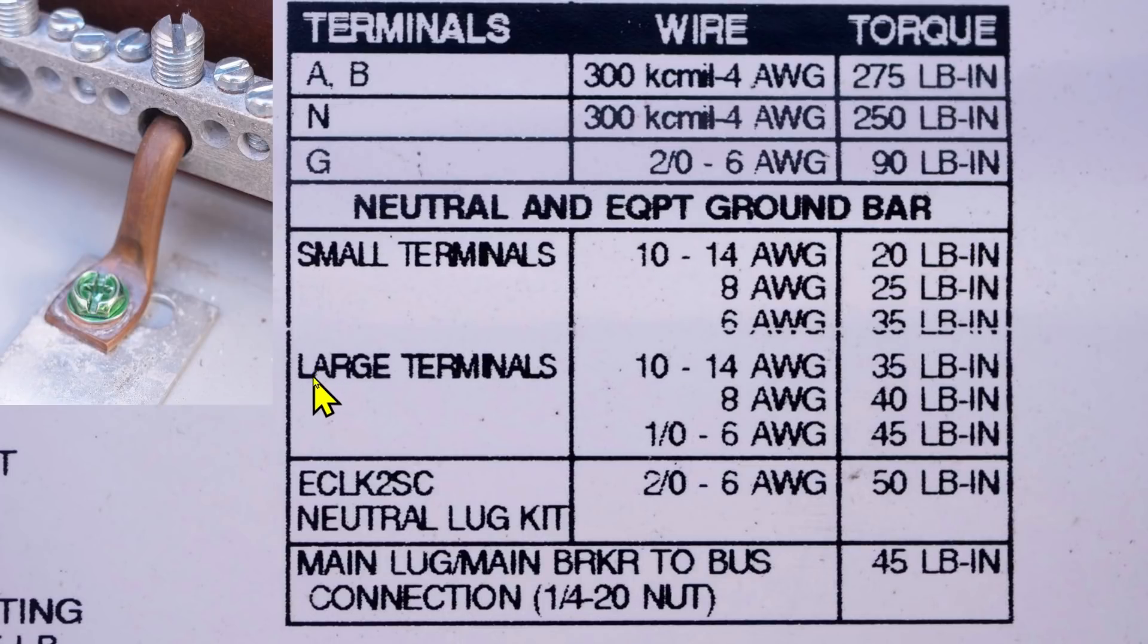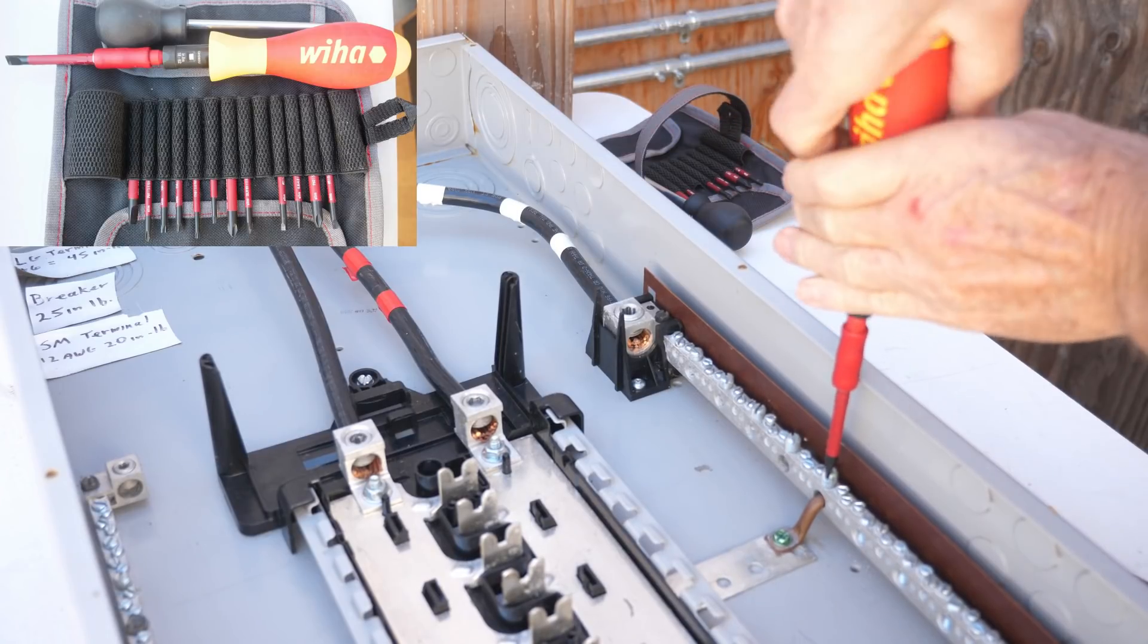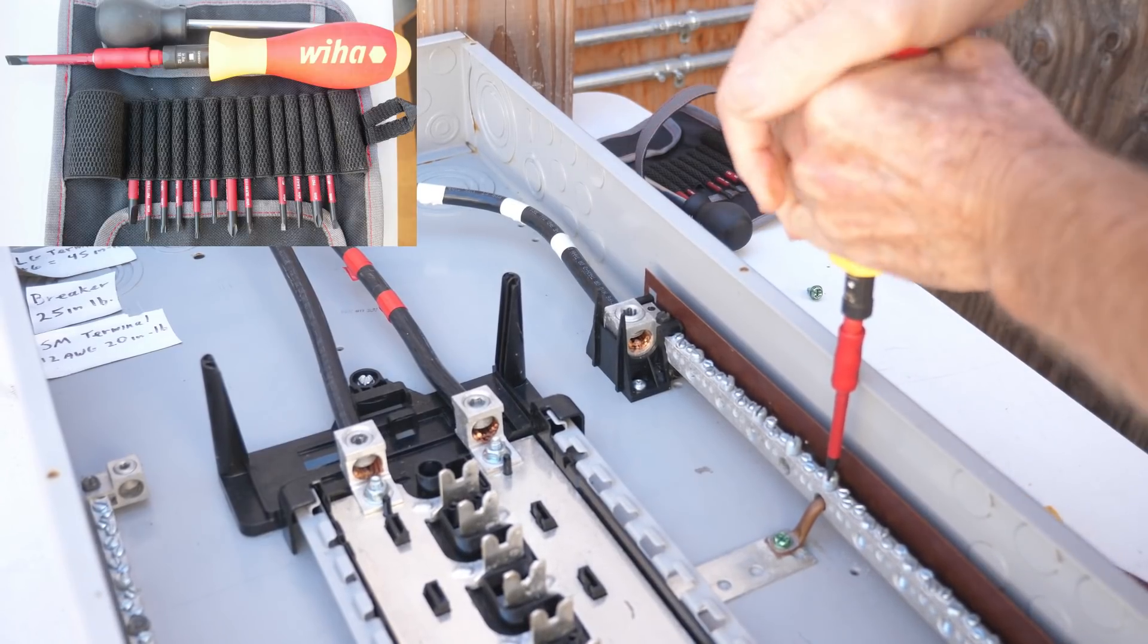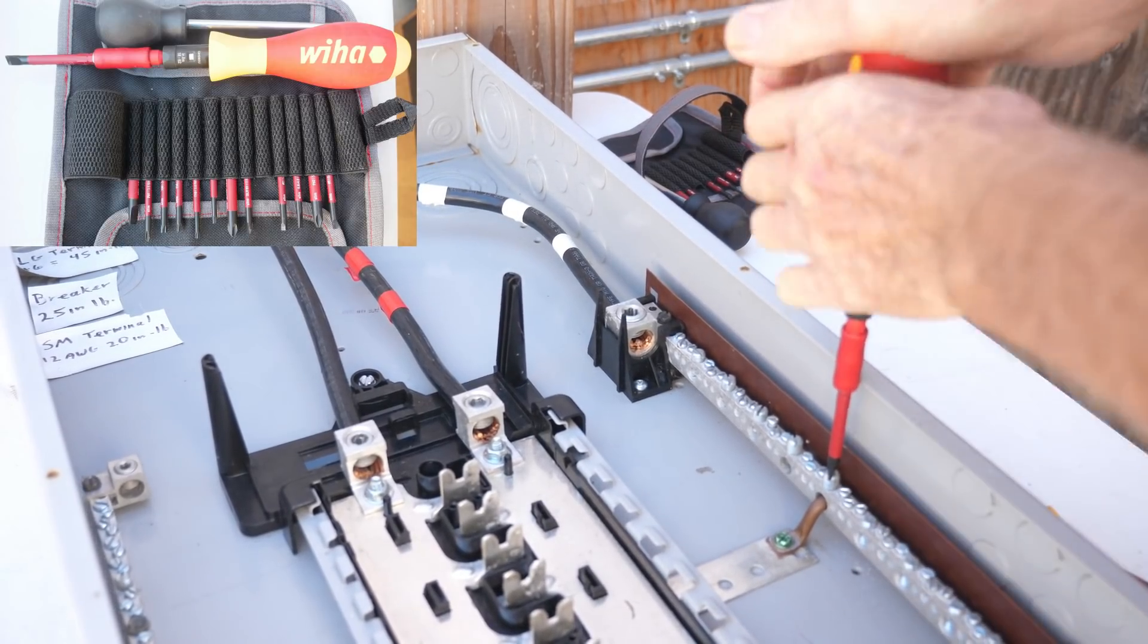We put it to a large terminal, and that piece of copper that we just put in the large terminal is between one aught and six AWG. We see here that it is to be tightened to 45 pound inch. So I'll set my Weehaw Torx screwdriver to 45 pound inch and tighten it until it clicks.